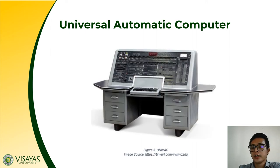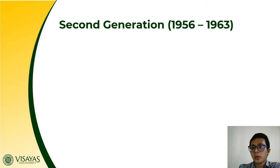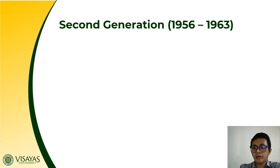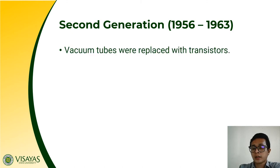As we have known, the use of vacuum tubes posed many disadvantages. Some of these problems include being more extensive, requiring more energy, dissipating more heat, and being prone to failures. With these problems identified — especially being prone to failures and overheating — the vacuum tubes were replaced. In the second generation, vacuum tubes were replaced with transistors.